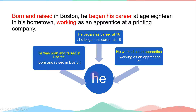中間的句子保留了主詞 he：he began his career。後面的 he worked as 變成分詞構句，因為它是主動的，所以變成 working as an apprentice。最後就形成我們看到的這個句子。